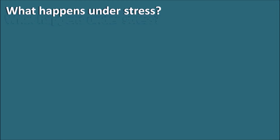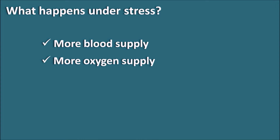What happens under stress? Suppose we are under stress — what do we require? We require more blood supply, because in order to work under stress our cells need more blood supply. Along with blood supply, cells also need more oxygen supply, and finally we need more energy in order to fight against the stress. So under activation of the sympathetic system, blood supply is increased, oxygen supply is increased, and more energy is produced.